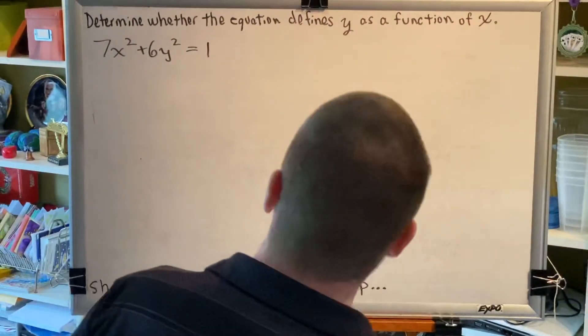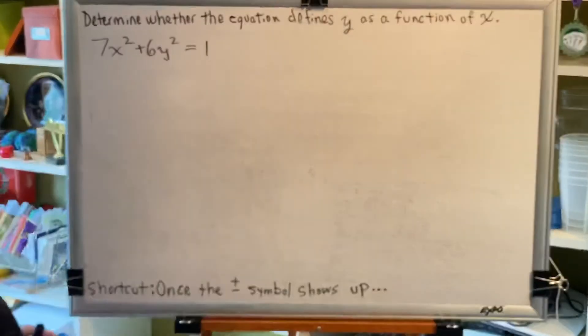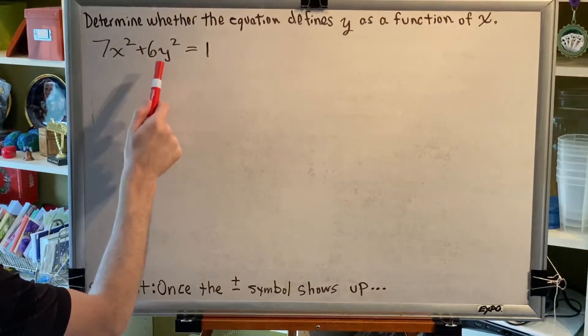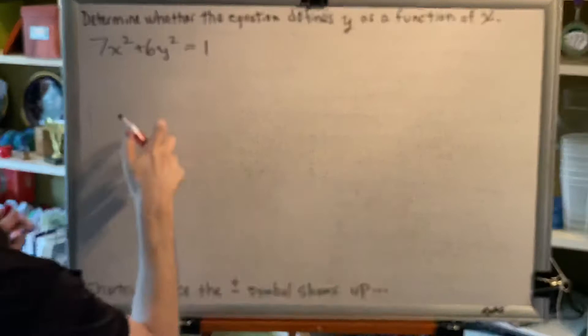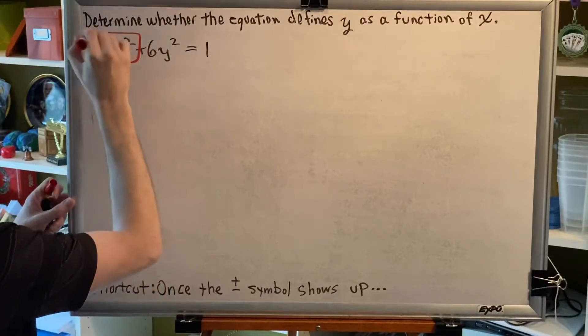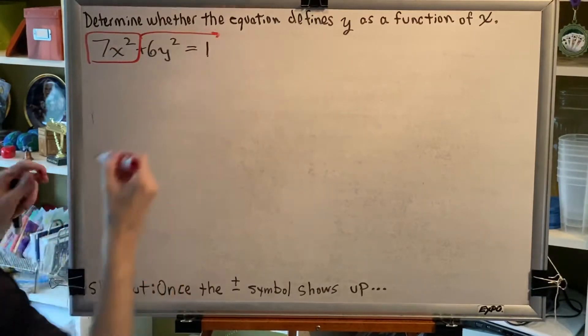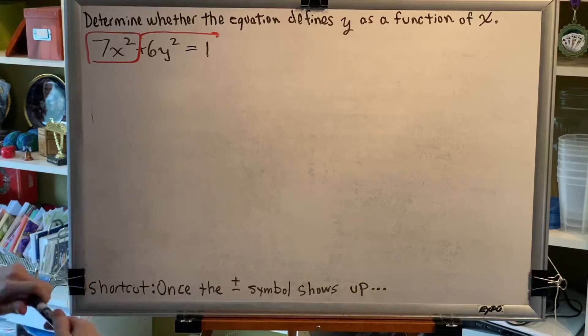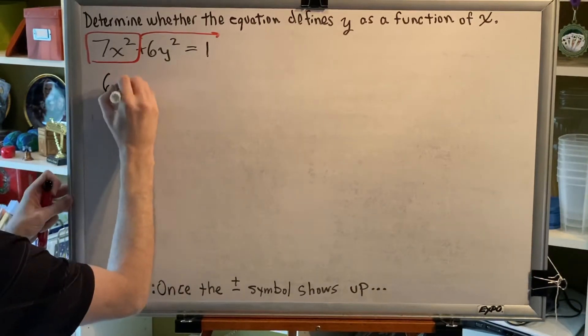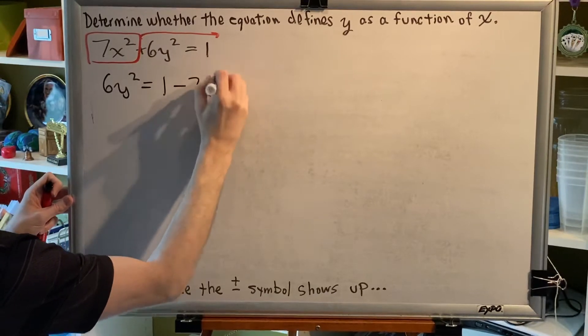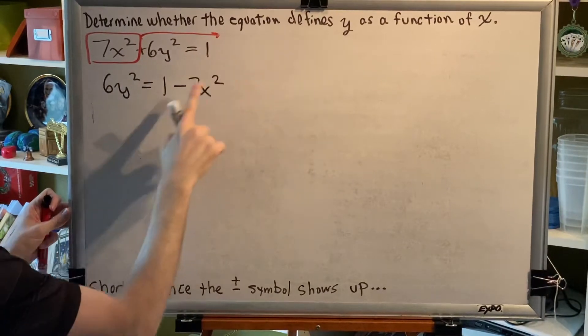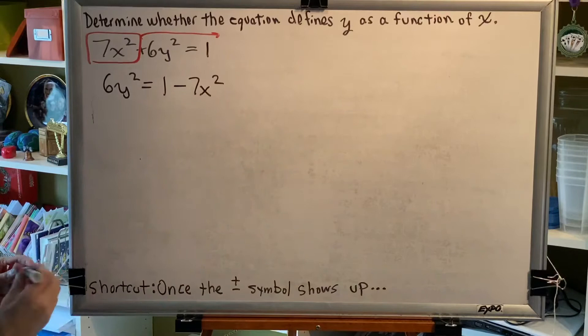We see that we have an equation here, and we've got three terms: 7x², 6y², and 1. Only one of those terms has y in it. So if we want to solve for y, we need to get all terms with y on one side, and all terms with no y on the other. So we're going to write 6y² = 1 - 7x², because when a term changes sides, it changes signs.